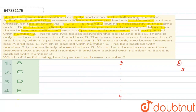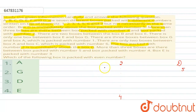Now let's look at the conditions. Let's find some information related to boxes 2 and 4. We can see that information related to box 2 is on the third line: the box packed with number 2 is immediately above box G. So box 2 is immediately above box G. If you keep 2 here and count this place, there are 8 boxes — but information is given for 7 boxes.